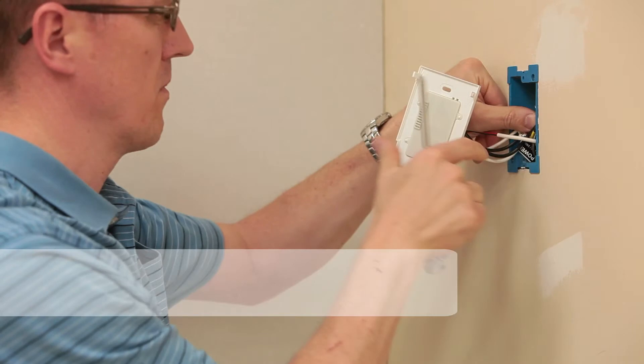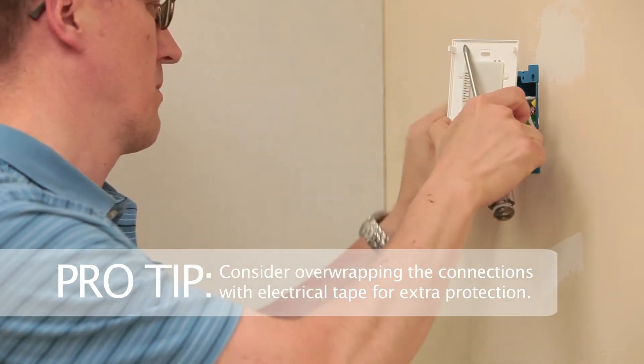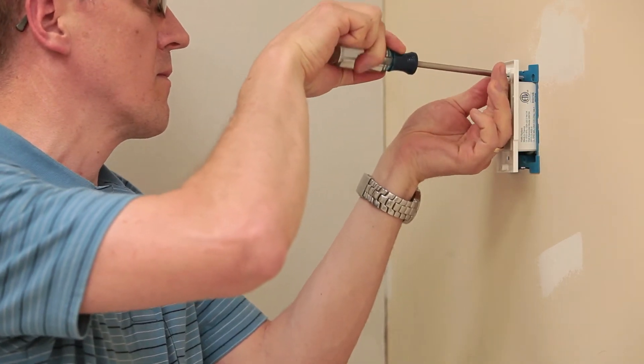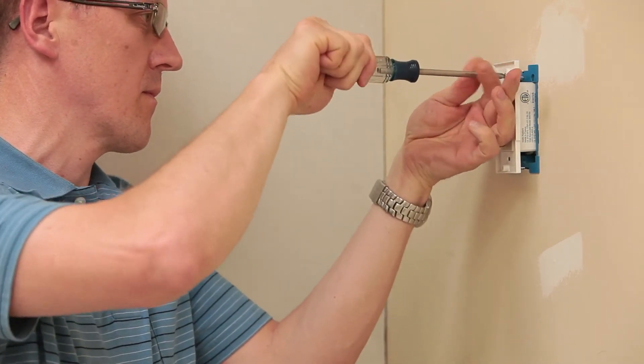Once the wires are well secured, carefully bend them into position within the electrical box. Ensure they are placed well enough back that the base will not have to force wires in place when fitting it to the electrical box.